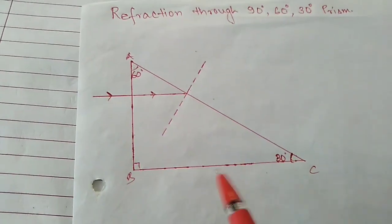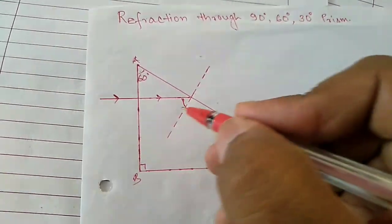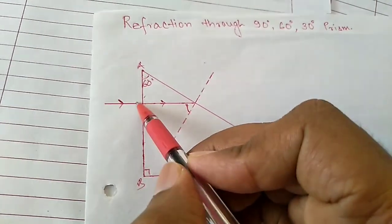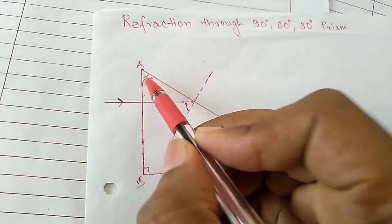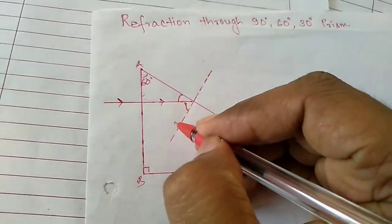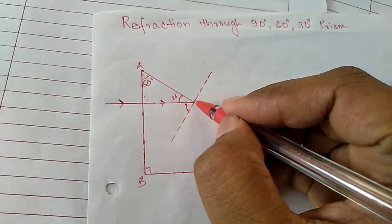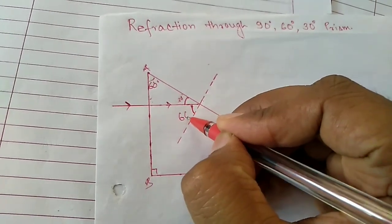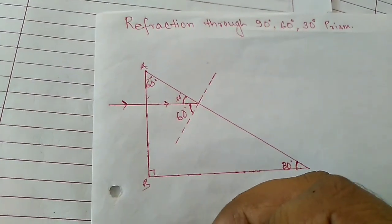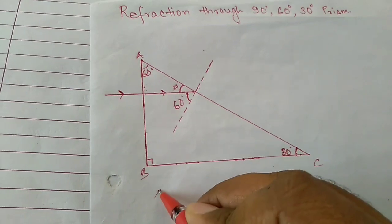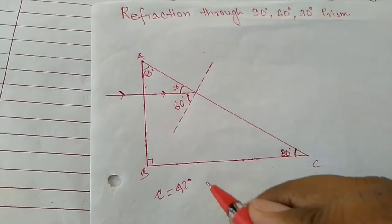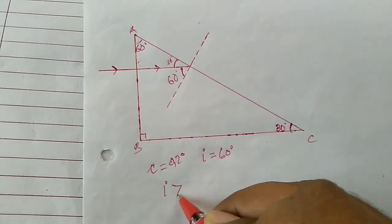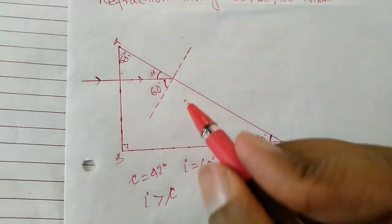The normal is perpendicular on surface AC. We have to calculate this angle. We can see this angle is 60, and this angle is 90 because the ray is going straight, falling normally. So the remaining angle is 30 degrees. The total angle is 90, so this is 30, and this angle is 60. So we have calculated our angle of incidence which is 60 degrees. Now if this is glass, glass has a critical angle of 42 degrees, and the angle of incidence is 60 degrees, which is greater than the critical angle. So total internal reflection will happen here.